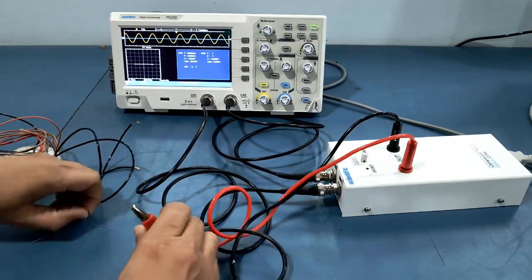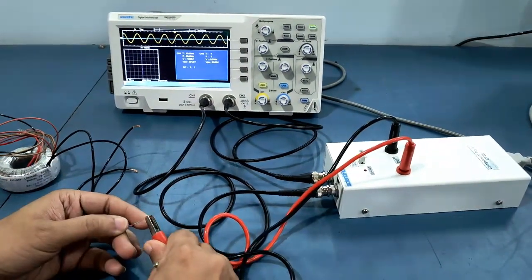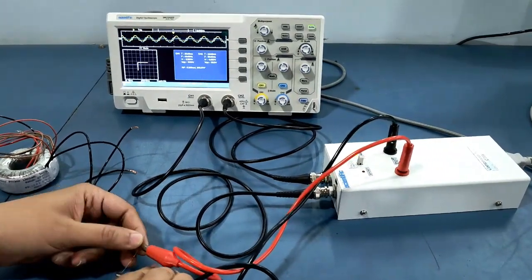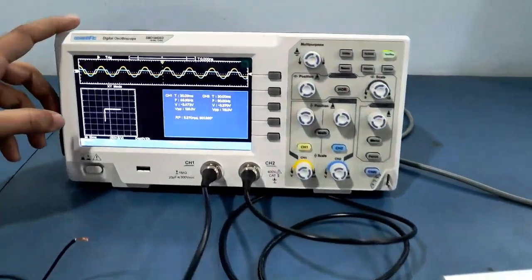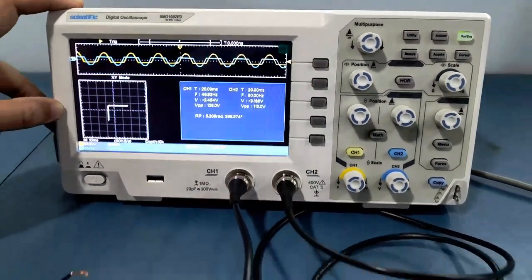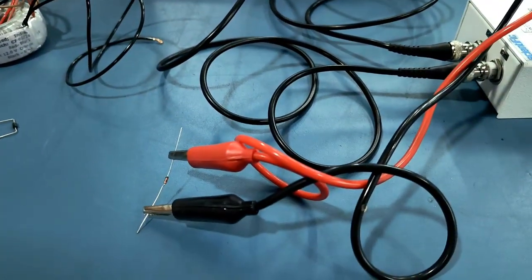Now we will check a Zener diode. Whatever component you connect to the component tester, you will get the corresponding pattern in XY mode on the DSO.